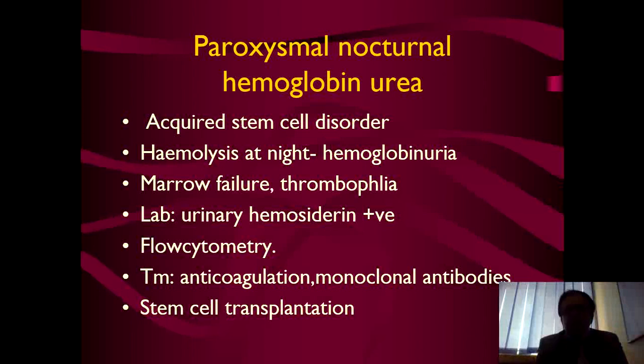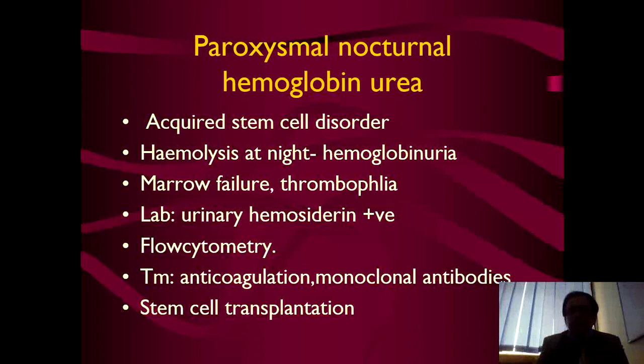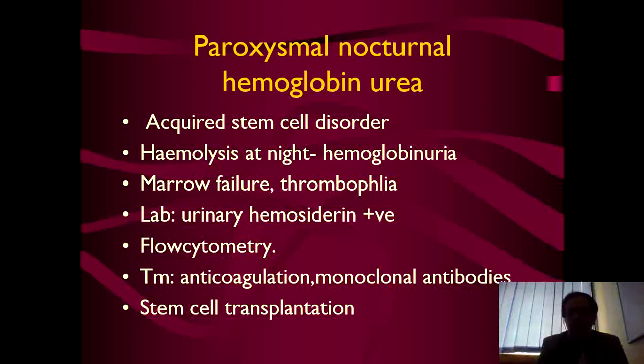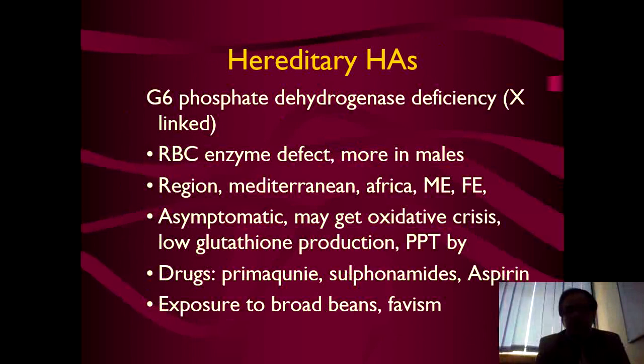Paroxysmal nocturnal hemoglobinuria (PNH) is another cause of hemolytic anemia. It is an acquired stem cell disorder with hemolysis at night — when the patient wakes up in the morning they find hemoglobinuria, i.e., black-colored urine. Causes may include marrow failure and thrombophilia. On laboratory investigation you will find hemosiderin in urine, and flow cytometry is another option for diagnosis. Treatment is anticoagulation, monoclonal antibodies, and stem cell transplantation. It is a difficult disease to treat.